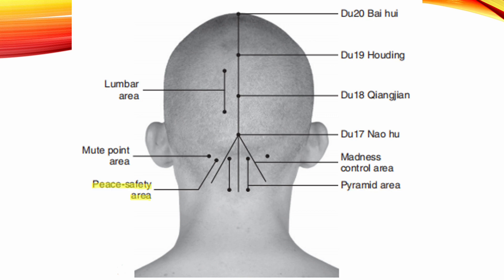P's Safety Area. Location: 2 cm lateral from the second cervical vertebrae. Indication: Muteness.